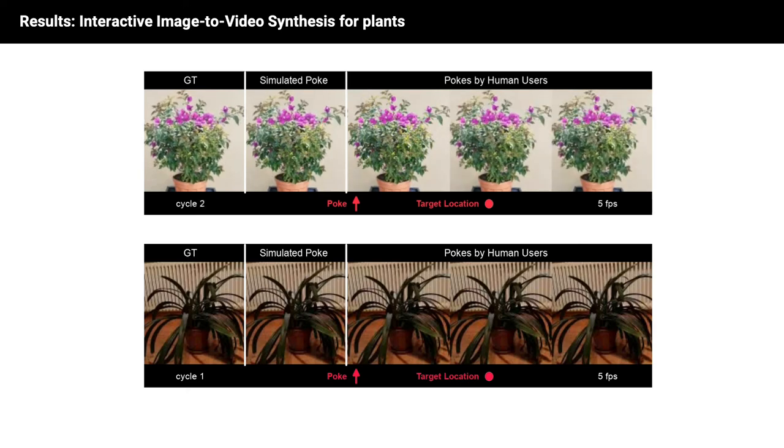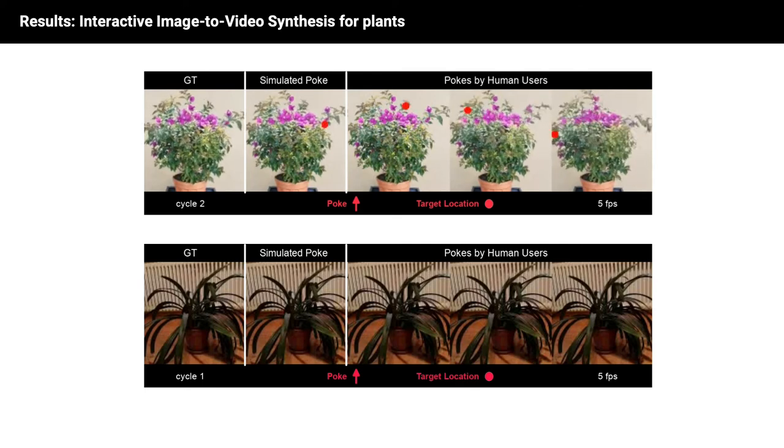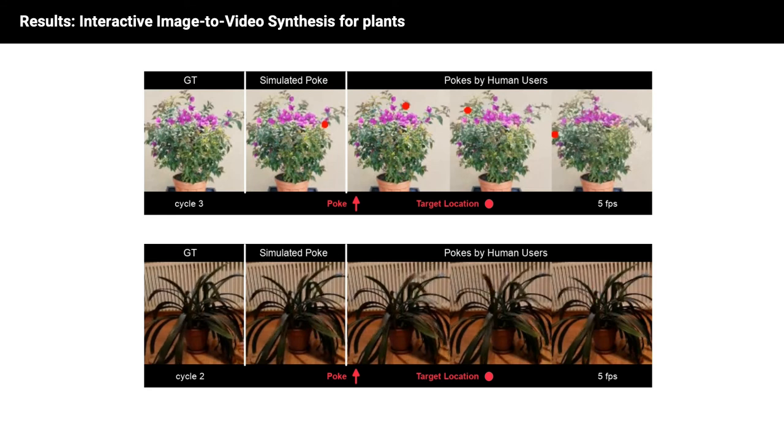In the first column of each example, we see the ground truth video starting with a frame, which our model animates by using the pokes depicted by the red arrows. The second column shows the prediction of our model and pokes obtained from optical flow. The last three columns show the results arising from pokes of human users.